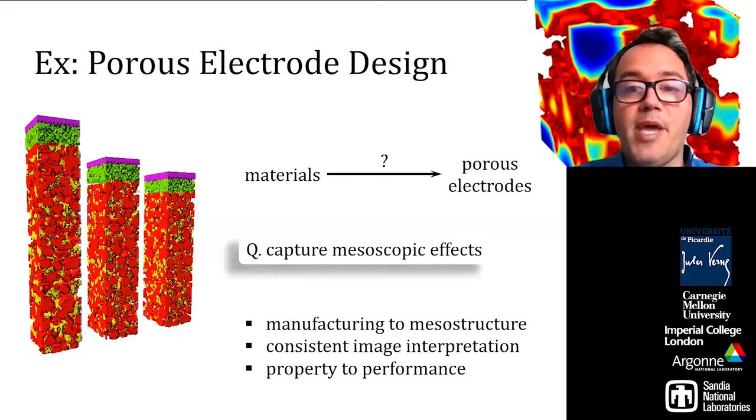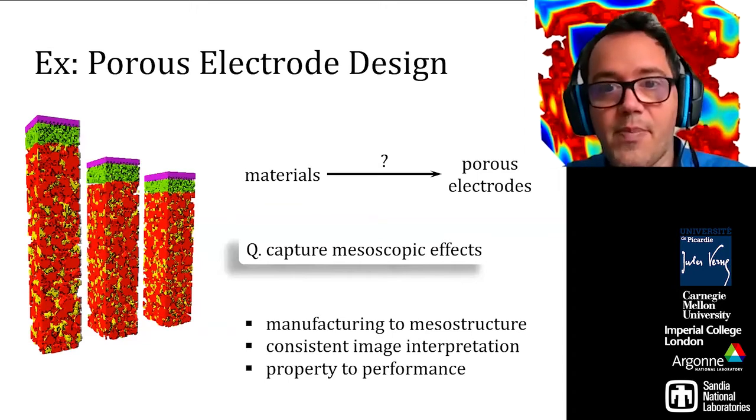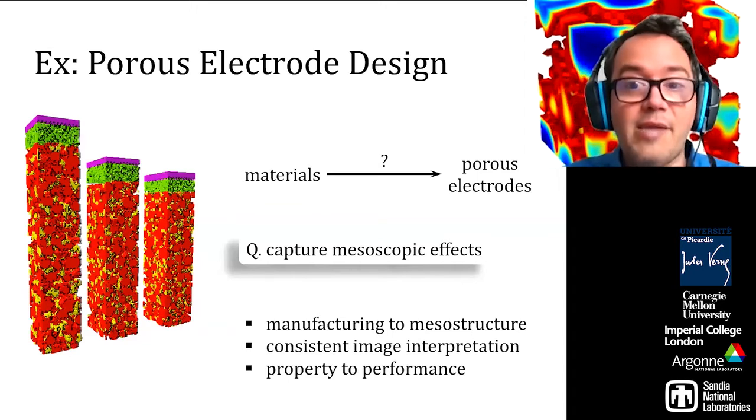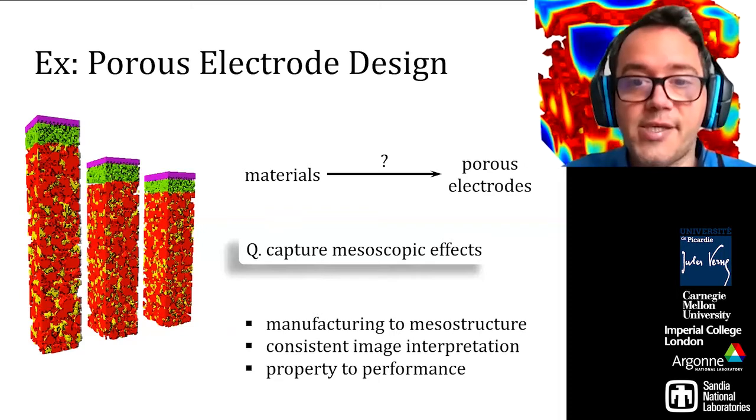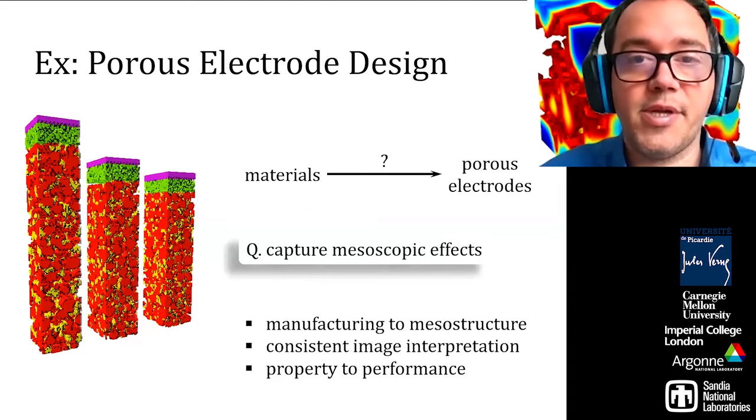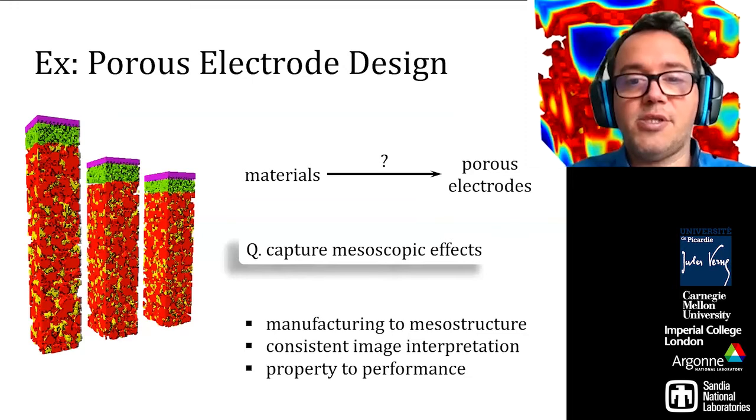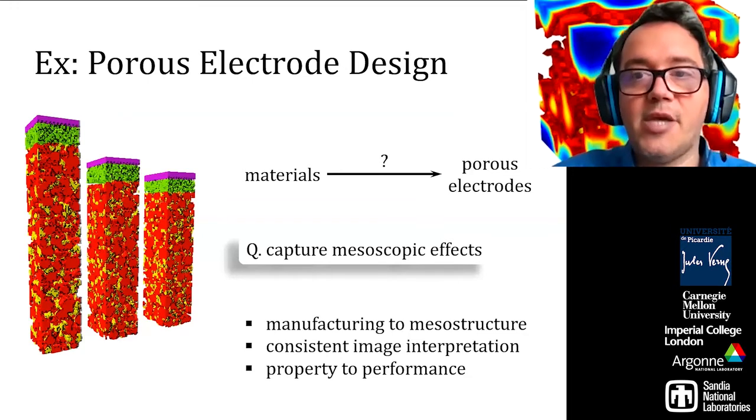Herein, appropriate machine learning can connect the electrode manufacturing step to the resultant mesostructure, automate analysis and reconstruction from x-ray images, or describe the electrochemical response in terms of mesostructural properties. Once we connect these dots, we can accurately prescribe how to prepare electrodes for a target application.